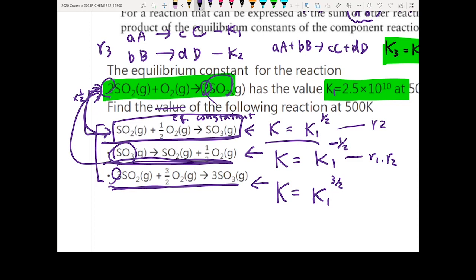For the very last equation, it's rule two again. The coefficients go from two to three, so the new K equals K1 raised to the two-thirds power. These are the types of questions you're going to see very often in your homework.